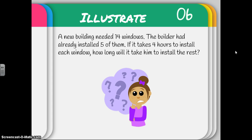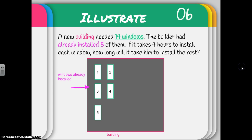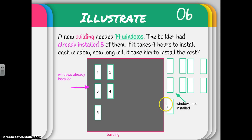I'm really going to think about that problem and take a second to get that strong mental image. 'A new building needed 14 windows. The builder had already installed five of them. If it takes four hours to install each window, how long will it take him to install the rest?' New building — so here's my building. I made a quick box to show my building. I know it needed 14 windows and I already installed five, so I put in one, two, three, four, five windows on my building. Then I put my extra windows over here on the side. So now I've got a quick mental image right here on my paper that's going to help me with problem solving.